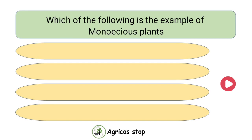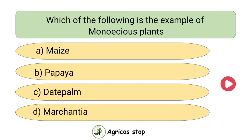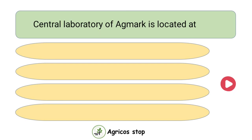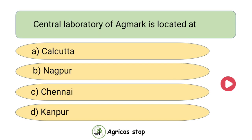Which of the following is the example of a monoecious plant? Options are maize, papaya, date palm, and marchantia. The answer is maize. Maize is the example of a monoecious plant, whereas papaya, date palm, and marchantia are the examples of dioecious plants. The central laboratory of AGMARK is located at Nagpur.